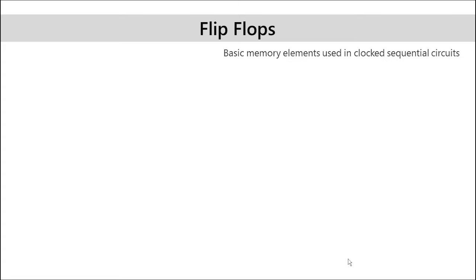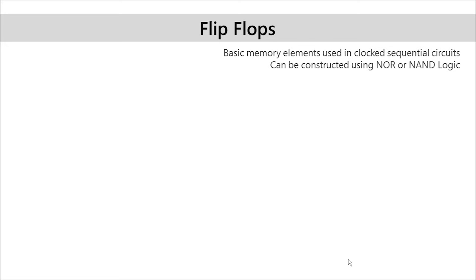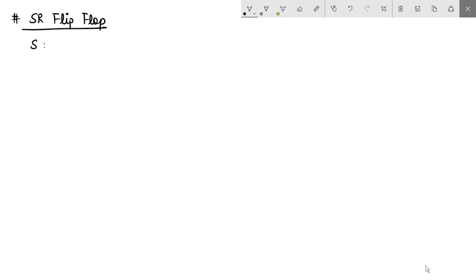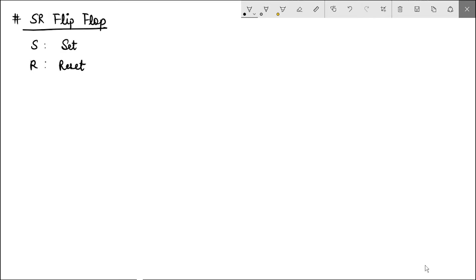Flip-flops are basic memory elements used in clocked sequential circuits, and flip-flops can be made using NOR or NAND logic circuits. There are different types of flip-flops like RS flip-flop, JK flip-flop, T flip-flop, and D flip-flop, but the most basic one we will discuss today is RS flip-flop, also called SR flip-flop. The SR flip-flop has two inputs S and R — S from the word set and R from the word reset. It can be implemented using NAND logic or NOR logic; in this lecture we are discussing the NOR logic.